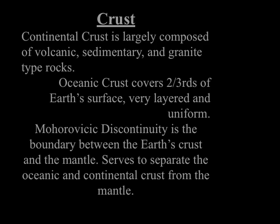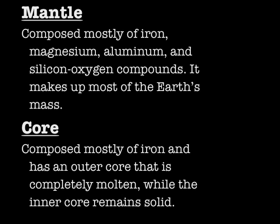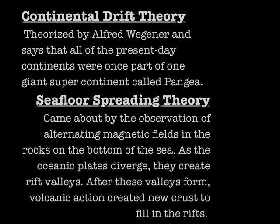The mantle is composed mostly of iron, magnesium, aluminum, and silicon-oxygen compounds, and it makes up most of the Earth's mass. The core is composed mostly of iron and has an outer core that is completely molten, while the inner core remains solid.